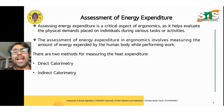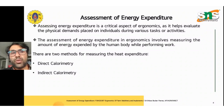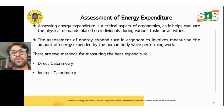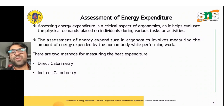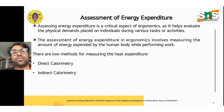Assessing energy expenditure is a critical aspect of ergonomics, as it helps evaluate the physical demands placed on individuals during various activities or work. The assessment of energy expenditure in ergonomics involves measuring the amount of energy expended by the human body while performing any kind of work. There are two methods of measuring this heat expenditure: direct calorimetry and indirect calorimetry.